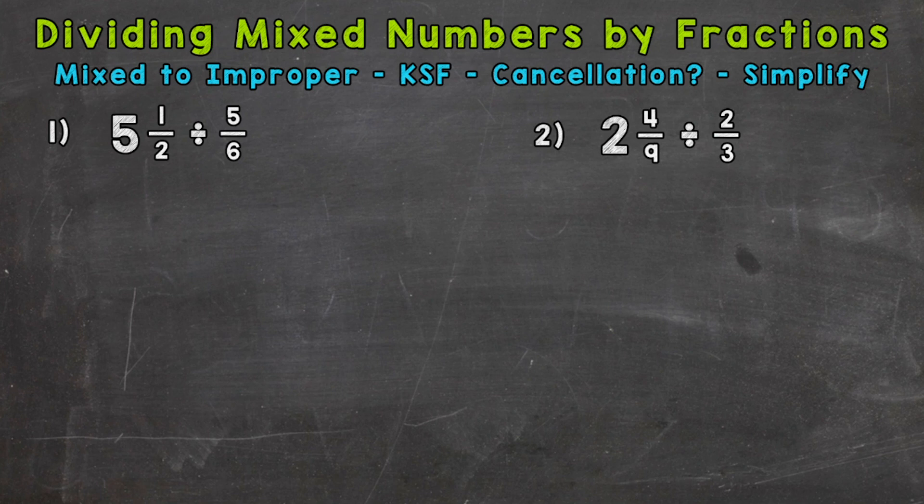So the first thing we want to do is change any mixed numbers to improper fractions. That way we just have a numerator, a top number, and a denominator, a bottom number. So we'll start with 5½ here, changing it to an improper fraction. We'll start at the bottom and work our way to the top. We need to multiply and then add. So 2 times 5 is 10 plus 1, 11. Keep our denominator of 2 the same. So 11 over 2 is 5½ as an improper fraction.